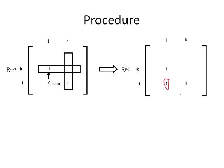The matrix we obtain after this process is called the resultant matrix. Initially, the resultant matrix is R^(k-1), and after applying the procedure for iteration k, the resulting matrix is called R^k.